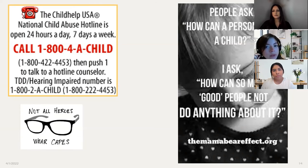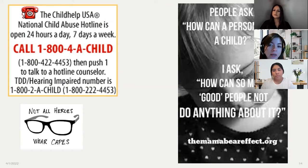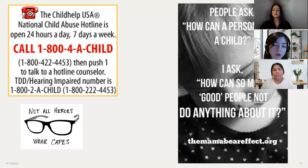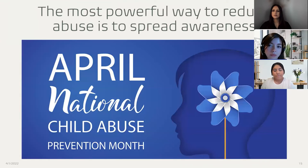Here is a powerful quote: "People ask how can a person abuse a child? And I ask, how can so many good people not do anything about it?" It's really important to speak up. There are plenty of hotlines you can call if you've ever witnessed abuse or have any suspicion. One of the most common hotlines is 1-800-422-4453. The most powerful way to reduce abuse is to spread awareness. April is National Child Abuse Prevention Month. The secrecy and shame of being abused often allows abuse to continue. We just don't talk about it enough — it's time to speak up.